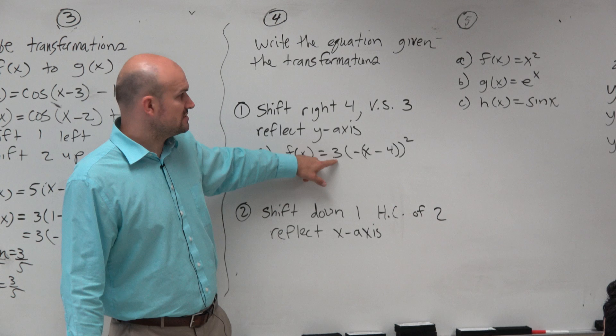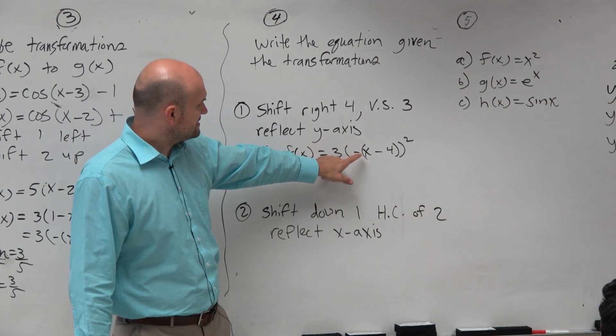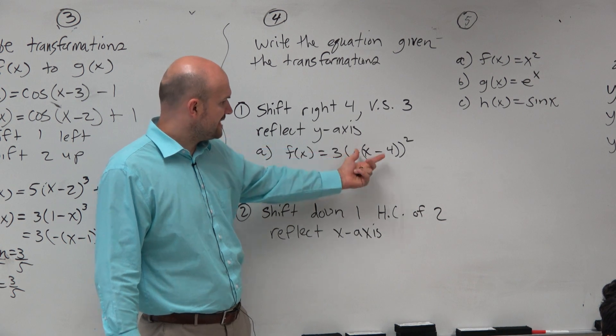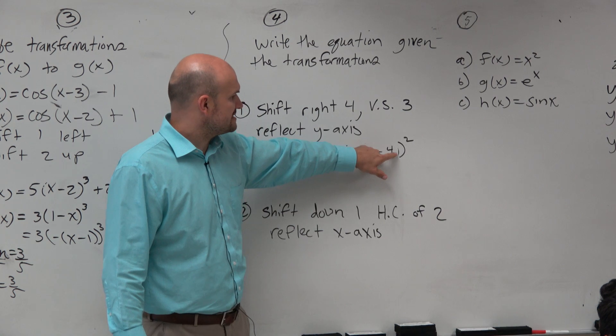Obviously, vertical shift is outside. So that has to be outside of my general function, the x squared. This has to be inside, and this is obviously inside. But again, if you didn't put these parentheses, that's not the same answer.